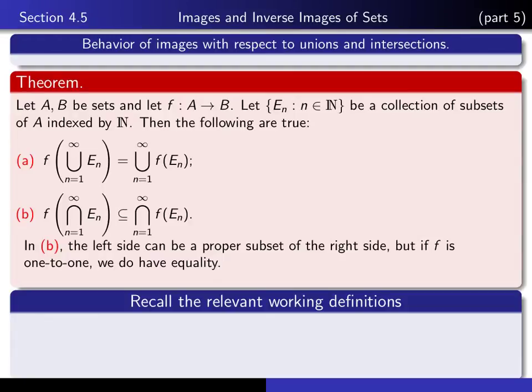So let's have a look at the relevant working definitions that we'll need in order to prove this. We need to recall what is the meaning of the image of a subset of the domain. So the image F of E is the set of all Y in the codomain such that there exists an X in that set E such that Y is equal to that F of X. It's the image of some element of E.